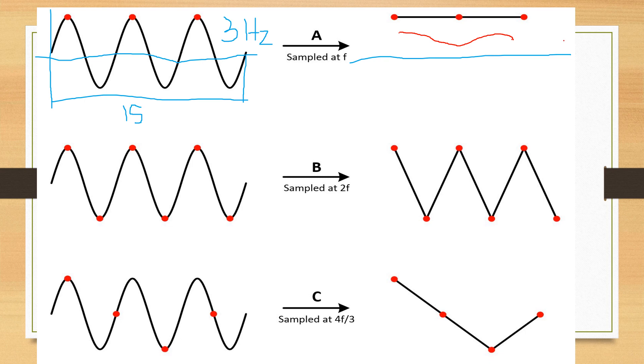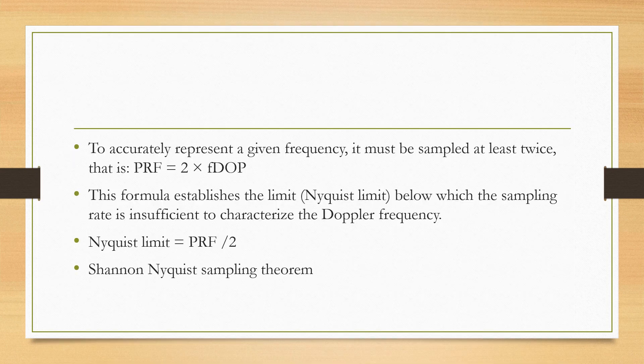The Nyquist Limit is the minimum frequency that can be sampled properly through that Doppler. To accurately represent a given frequency, it must be sampled at least twice. For example, for a four hertz signal, the minimum sampling rate needed to recreate the original is eight hertz — PRF equals two times the signal frequency. If the Pulse Repetition Frequency is 10, the Nyquist Limit is up to five hertz. The Nyquist Limit equals Pulse Repetition Frequency divided by two.